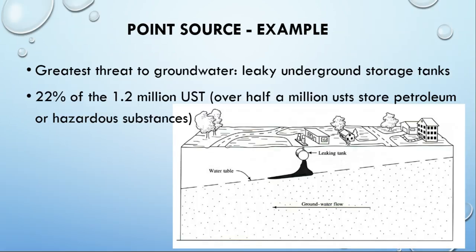Another really good example of a point source is leaky underground storage tanks, abbreviated UST. Underground storage tanks have a tendency to leak, and when they leak they will leak directly into the groundwater. We will address groundwater pollution when we look at the water cycle and pollution together.